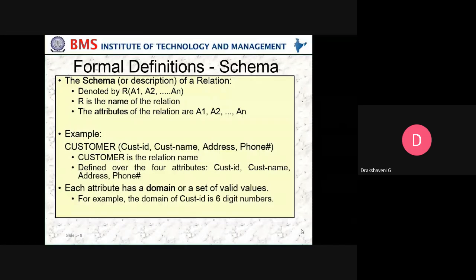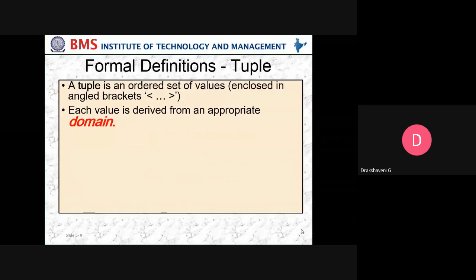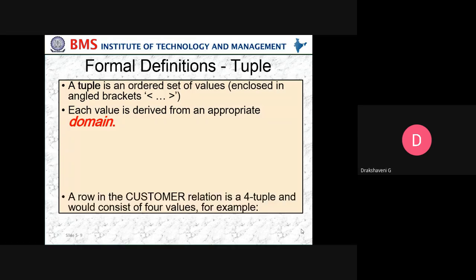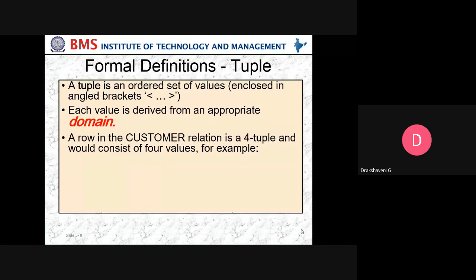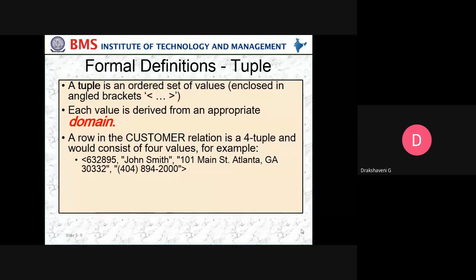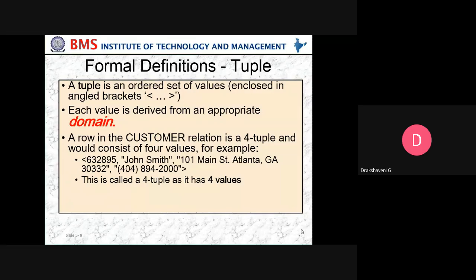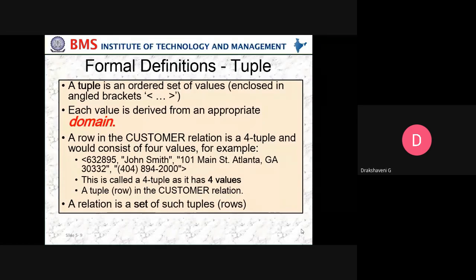Each attribute has a domain or a set of valid values. For example, the domain of Customer_ID is a six-digit number. A tuple is an ordered set of values enclosed in angle brackets, where each value is derived from an attribute domain. A row in the customer relation is a four-tuple and consists of four values. For example, Customer_ID, then the customer name John Smith, the address of John Smith, and the phone number — this is a four-tuple with four values.